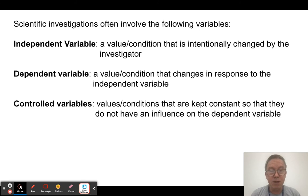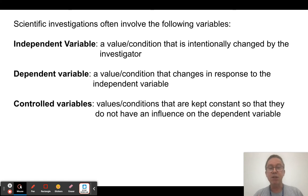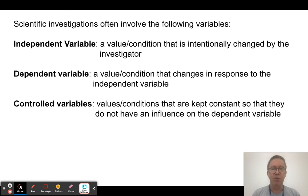In scientific investigations, it's very important to keep in mind three variables. The independent variable is the variable that you are going to make changes to or that you have a hypothesis about — it is a value or condition that the investigator tries to manipulate. The dependent variable is something that responds to changes in the independent variable. Controlled variables are very important because if you don't have good controlled variables, you don't really know how the independent variable is affecting the dependent variable.